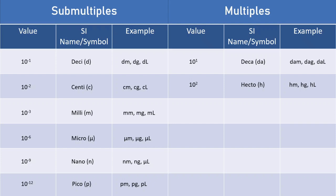The prefix for hecto is a lowercase h. Then we have the more commonly used kilo, which is 1000 times the base SI unit — so kilometers, kilograms, kiloliters. These are more frequently used than hecto and deca, and the prefix for kilo is lowercase k. We then have mega, which is 1 million times the size of the base SI unit, so a megameter is 1 million meters. The prefix here is an uppercase M — make sure you remember it's uppercase, because a lowercase m would be milli.